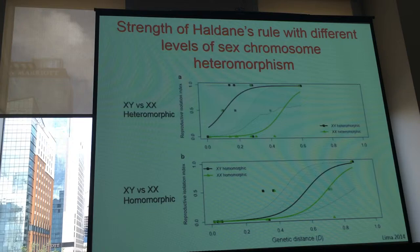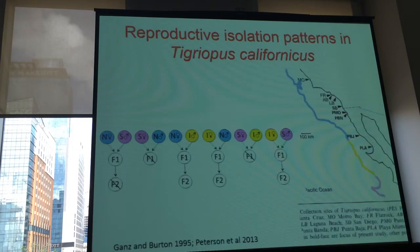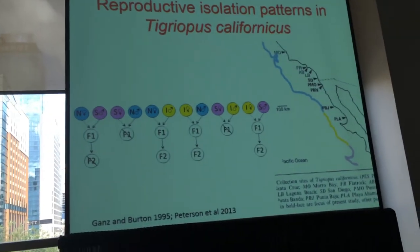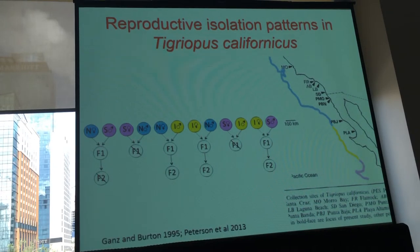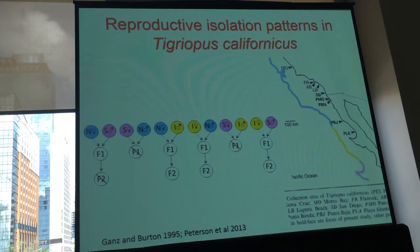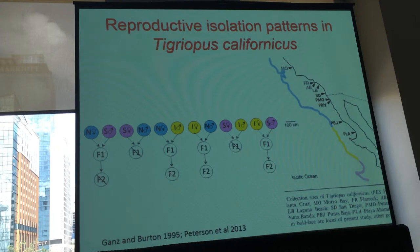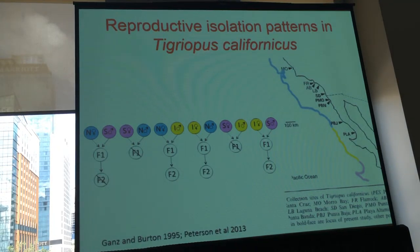By this reasoning, you would expect that if you don't have any sex chromosomes, there should be no difference between the two sexes in the F1 hybrid. And this is what we see in Tigriopus californicus, a copepod that does not have sex chromosomes — sex is determined by polygenic inheritance, several genes in different chromosomes — and there is no difference between males and females in the F1 hybrid, but we do have different clades.